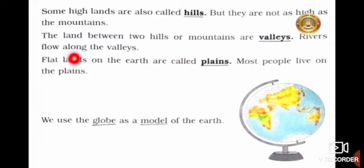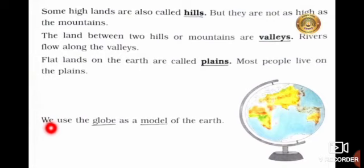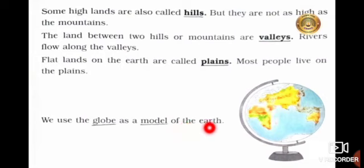Rivers flow along the valleys. Flat lands on the earth are called plains — P-L-A-I-N-S, plains. Most people live on the plains. We use the globe — G-L-O-B-E, globe — as a model — M-O-D-E-L, model — of the earth.